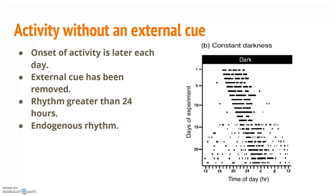In graph B, the squirrel is in constant darkness because the external cue has been removed. You need to state what the graph is actually showing you. One of the first things you could say is that the activity is getting later each day. Why is that? Because the external cue has been removed, the internal biological clock can't be reset. As the activity is starting later each day, this must mean that the rhythm is more than 24 hours. However, we know it's an endogenous rhythm, as even without the external cue resetting it, there is still a main block of activity.